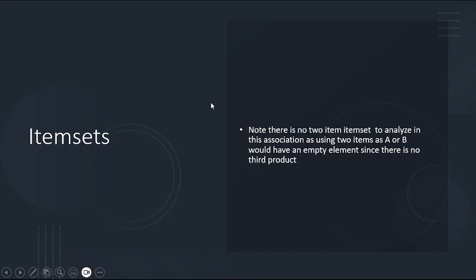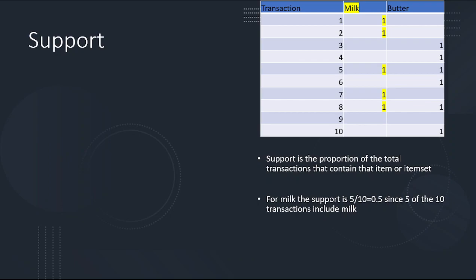Note that there is no two-item item set to analyze because we have to have at least three items to have a two-item item set. If you only have two items, the only thing you can do is A to B. You have to have three or more items to have a two-item item set.